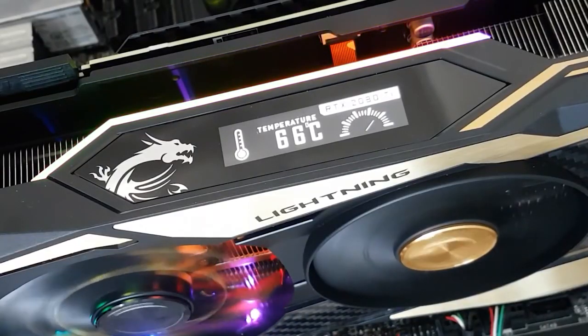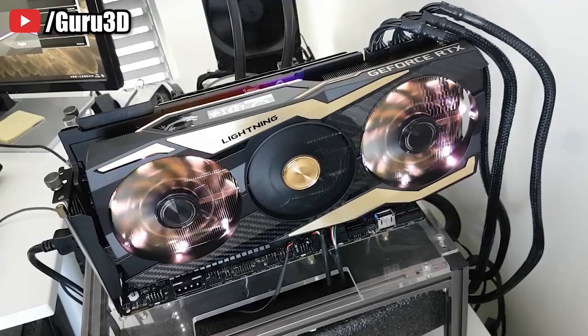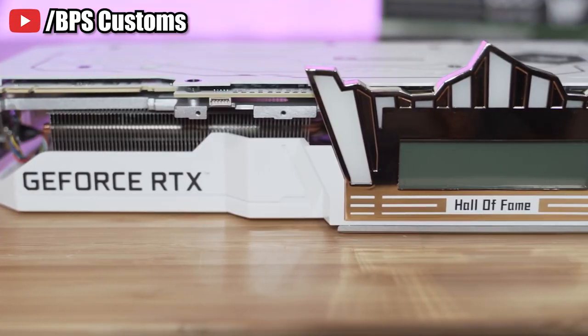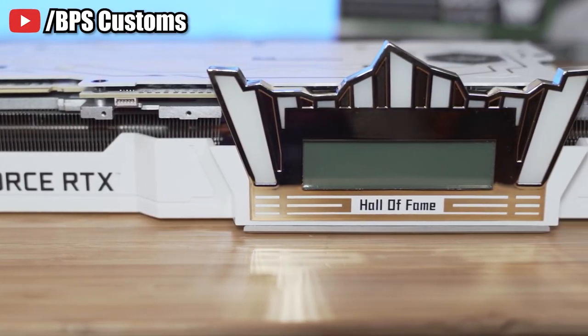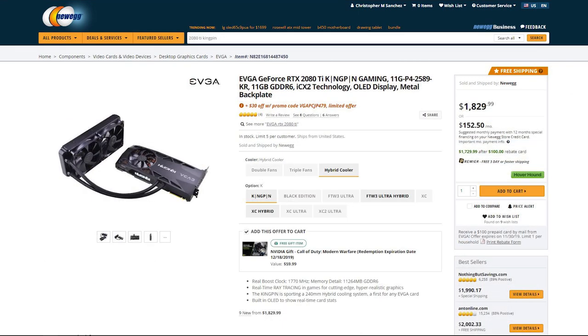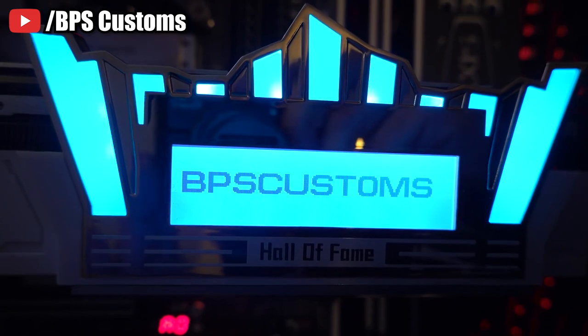But what interests me the most is seeing these OLED displays on graphics cards. Now these OLED displays are reserved for the highest of graphics cards, the RTX 2080 Ti Special Editions. I'm talking about the MSI Lightning Z, the EVGA Kingpin, and the GALAX Hall of Fame cards. But if you want to get your hands on these cards you're going to have to pony up some serious cash. The GALAX Hall of Fame edition isn't even available in the United States. Brian of BPS Customs had to get his hand delivered from Australia. Show off.